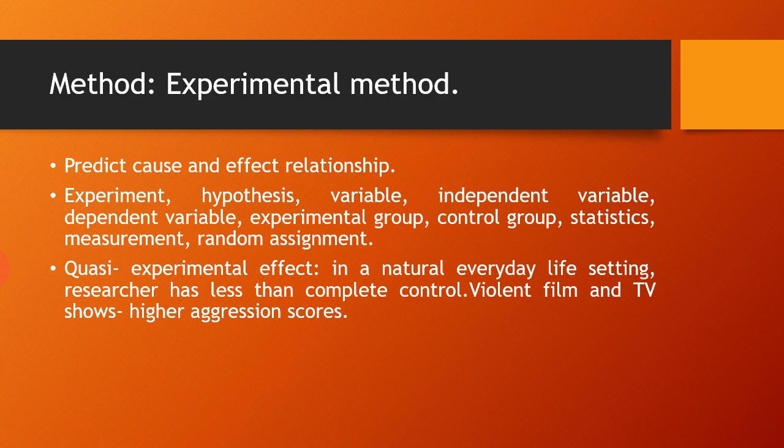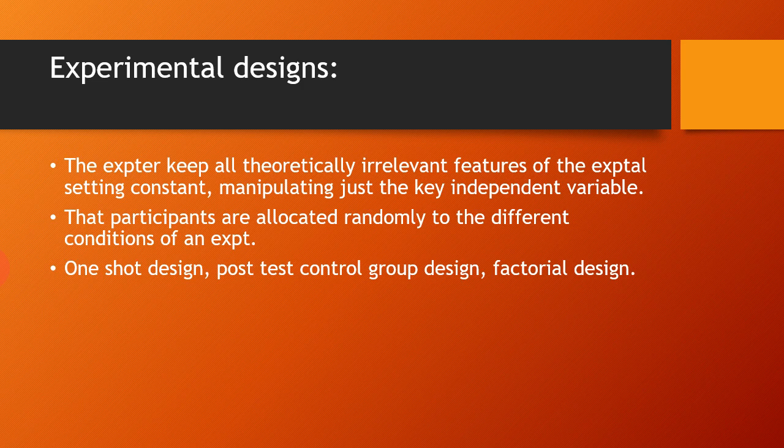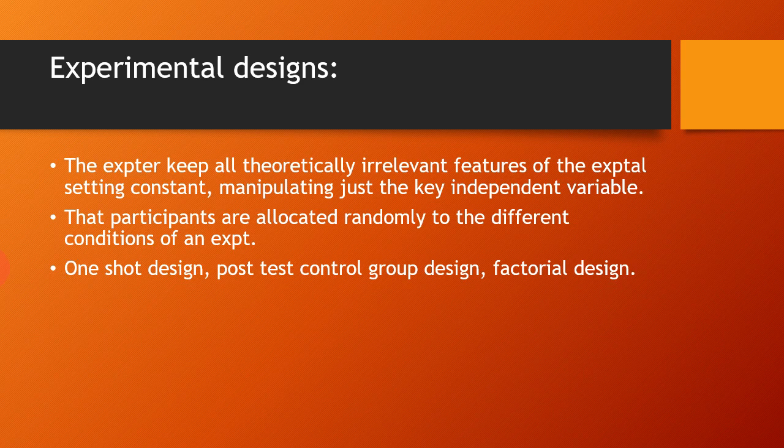Experimental method is the dominant research method for testing theories that predict causal relationships between variables. Only from experimental method can we find cause and effect relationships. Various terminologies include experiment, hypothesis, variables, independent and dependent variables, experimental group, control group, statistics, measurement, and random assignment. Various experimental designs include one-shot design, post-test control group design, pre-test post-test design, and factorial designs.